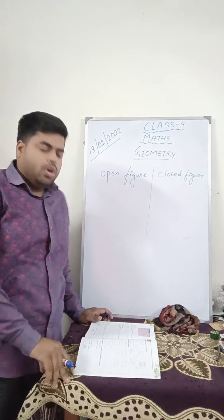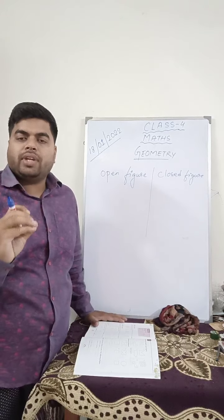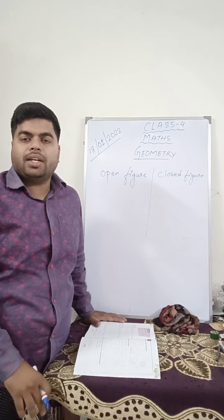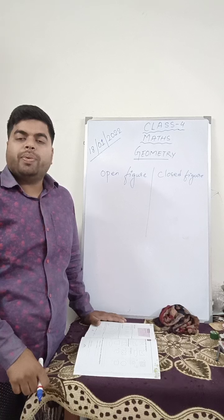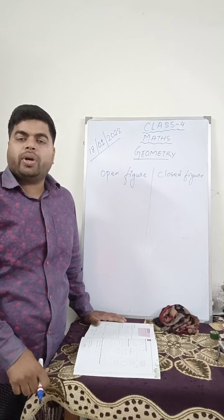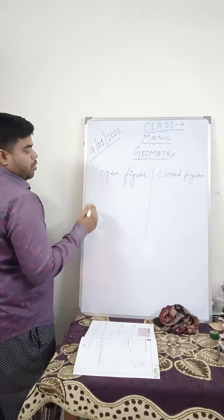Open figures are those which have a starting point but the ending point of that figure does not meet that starting point. But closed figures are those figures where the starting point and the ending point is the same. So suppose if you talk about open figure,